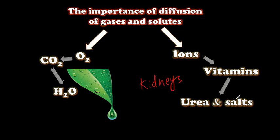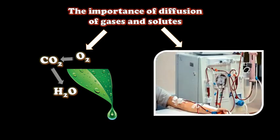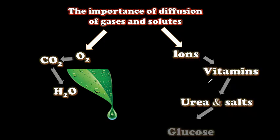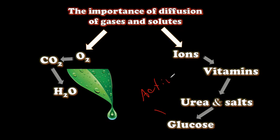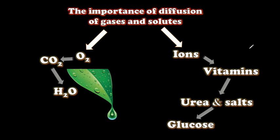Urea and salts get in and out of the blood through the kidney by diffusion — that's how blood is filtered. In dialysis, if someone has kidney failure, their blood runs through a dialysis machine which uses diffusion to remove waste substances from the blood. Glucose reabsorption also happens by diffusion, but most of it happens by active transport.